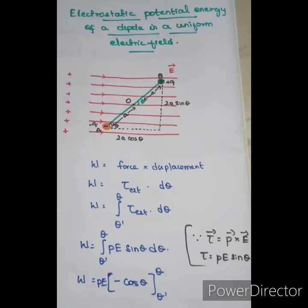Next, the uniform electric field. A uniform electric field is one where the direction and magnitude are the same throughout. That is the uniform electric field.